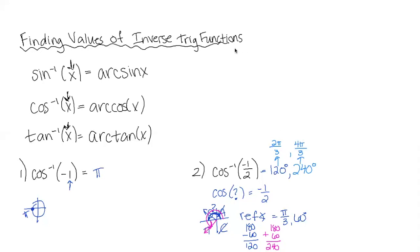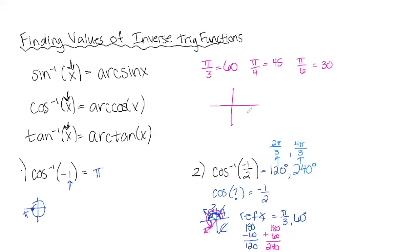Quick refresher: π/3 equals 60 degrees, π/4 equals 45 degrees, and π/6 equals 30 degrees. When figuring out angles in other quadrants using these reference angles, the second quadrant angle is 180 minus theta, the third quadrant is 180 plus theta, and the fourth quadrant is 360 minus theta.